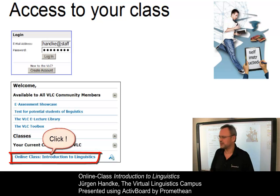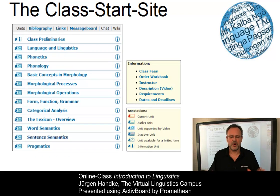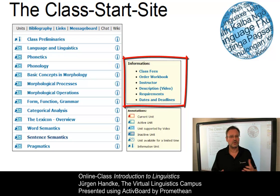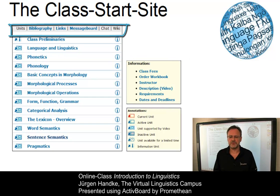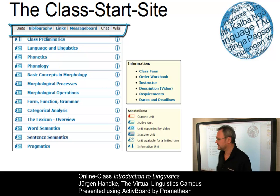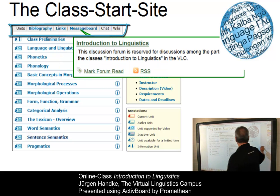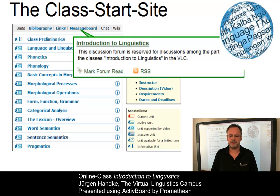A click on this link leads you to the interactive class start site. On the class start site, you have access to various additional options such as information about your class instructor or the class requirements, to name just two of them. The links in the class header provide you with a complete list of references, the bibliography, some class-related links and a hyperlink to the class-related forum, which is open for all registered users of your class.